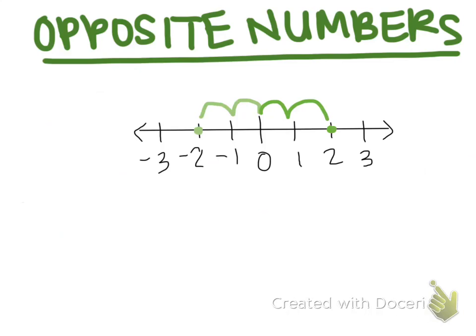Because negative two is two spaces away from zero to the left, and positive two is two spaces away from zero to the right,